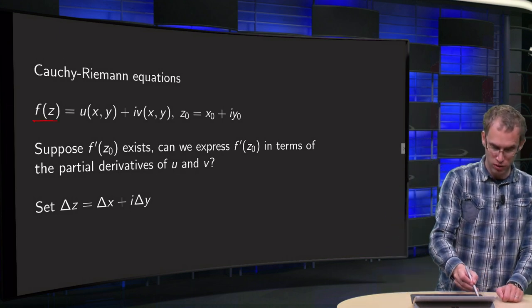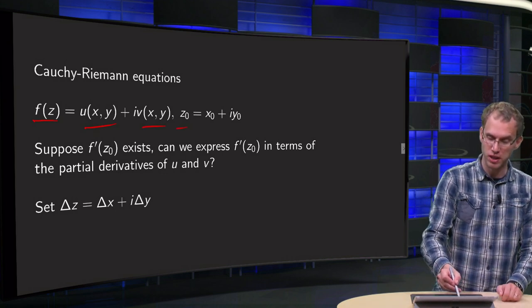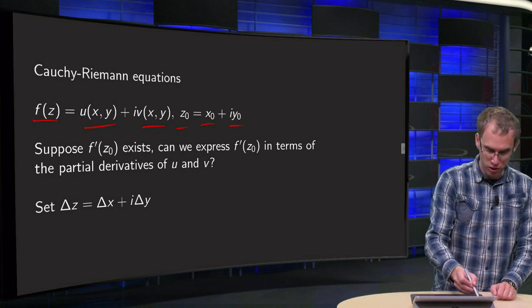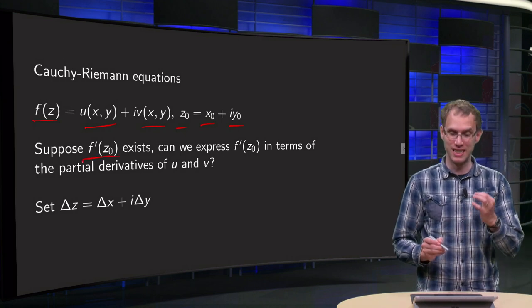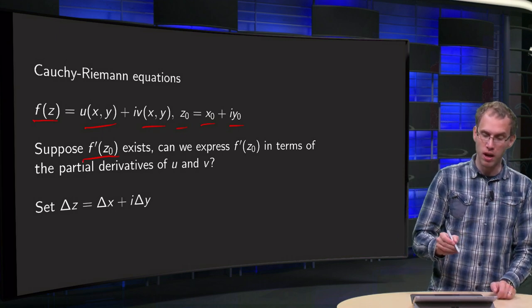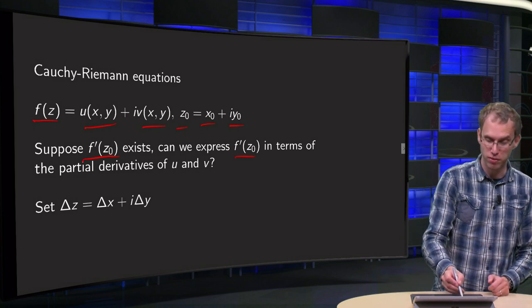We write our f(z) as u plus i times v and we write our point z₀ as x₀ plus i times y₀. And now we say, suppose f'(z₀) exists, we suppose f is differentiable at z₀. Can we express f'(z₀) in terms of partial derivatives of u and v?